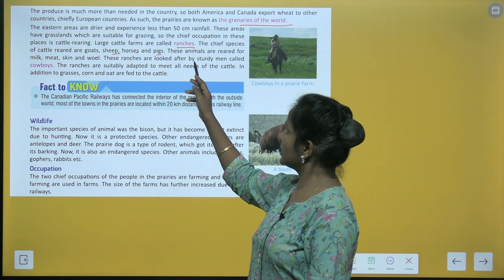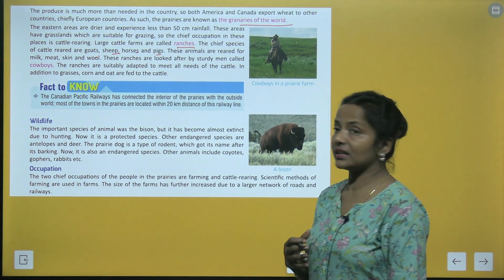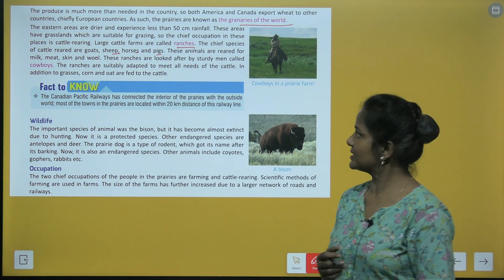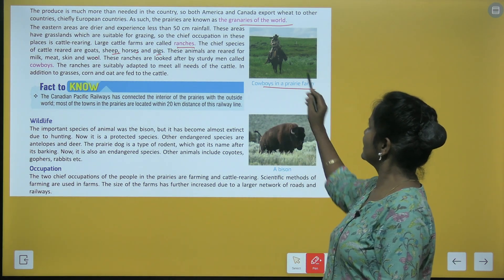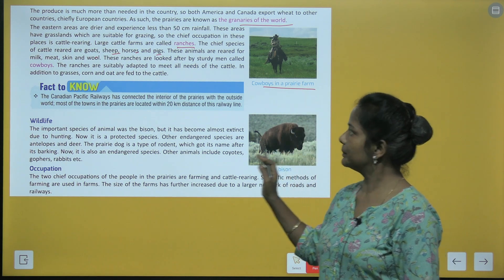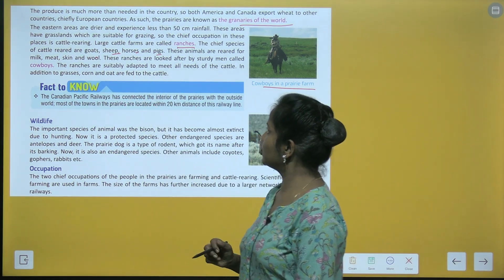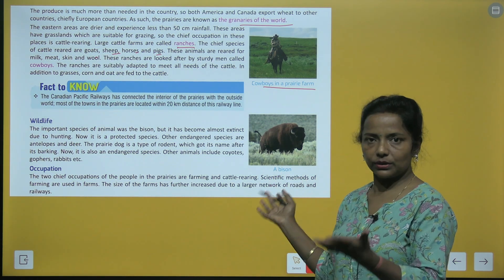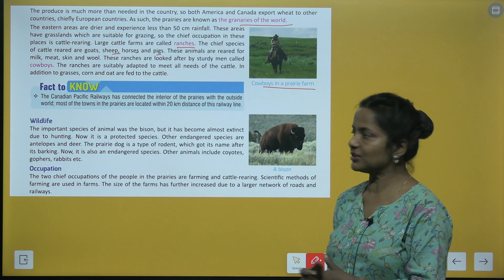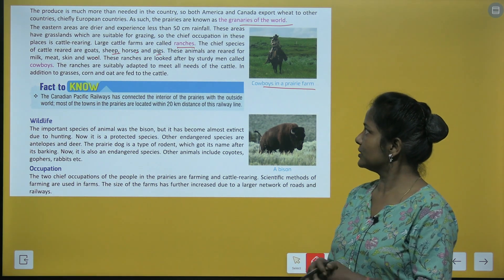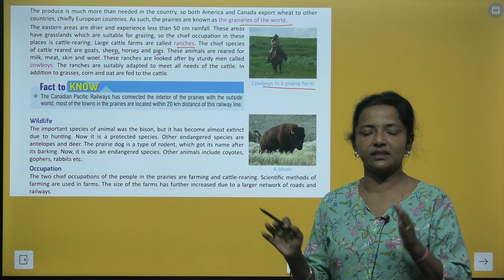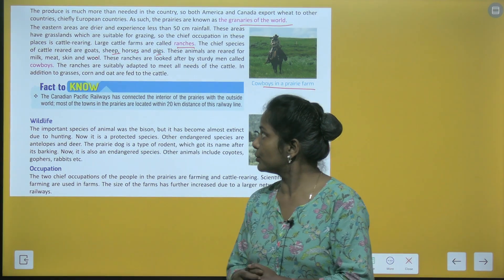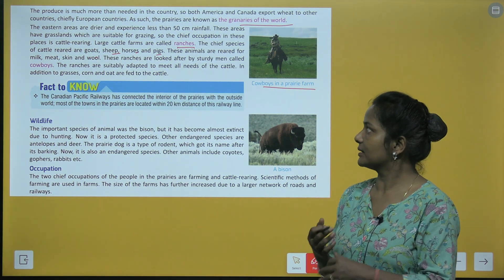These ranches are looked after by sturdy men called cowboys. The ranches are suitably adapted to meet all needs of the cattle. In addition to grasses, corn and oats are fed to the cattle.